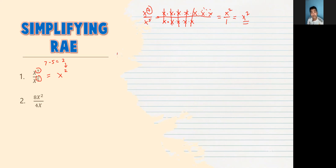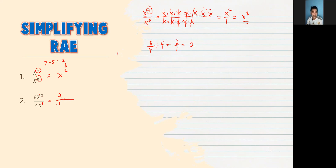Number 2: combination of numerical and variable — 8x squared over 4x. Si 8 ay divisible by 4, so pwedeng i-divide natin both numerator and denominator by 4, magiging 2 over 1. For the x: the exponent in the denominator is 1 kapag hindi nyo nakikitaan ng exponent. Subtract: 2 minus 1, the answer is 1. Yung x ay nasa numerator kasi x squared is higher than x. So the final answer here is 2x.